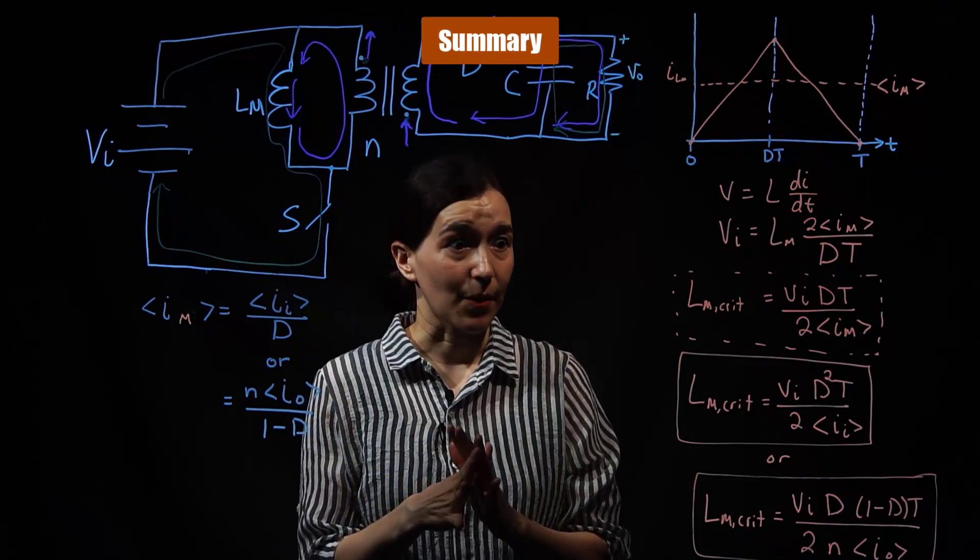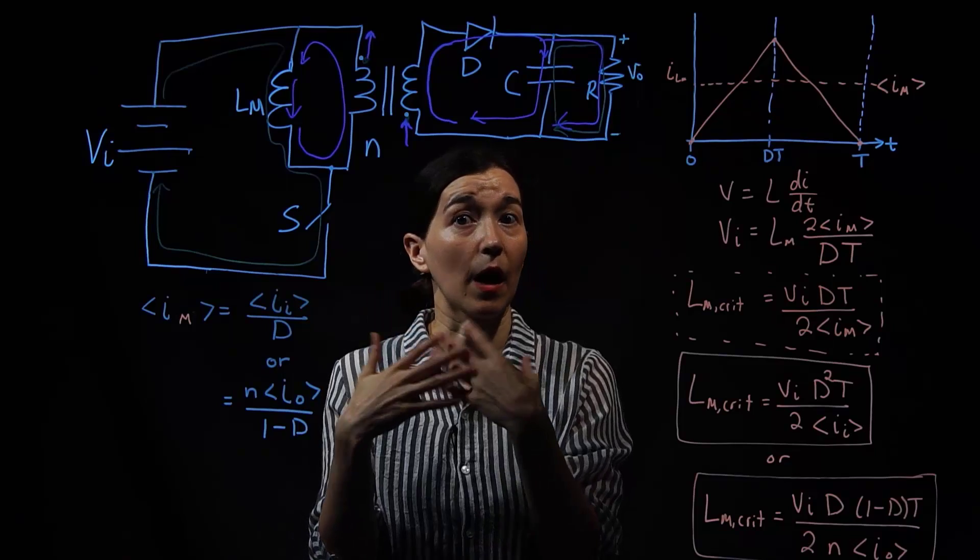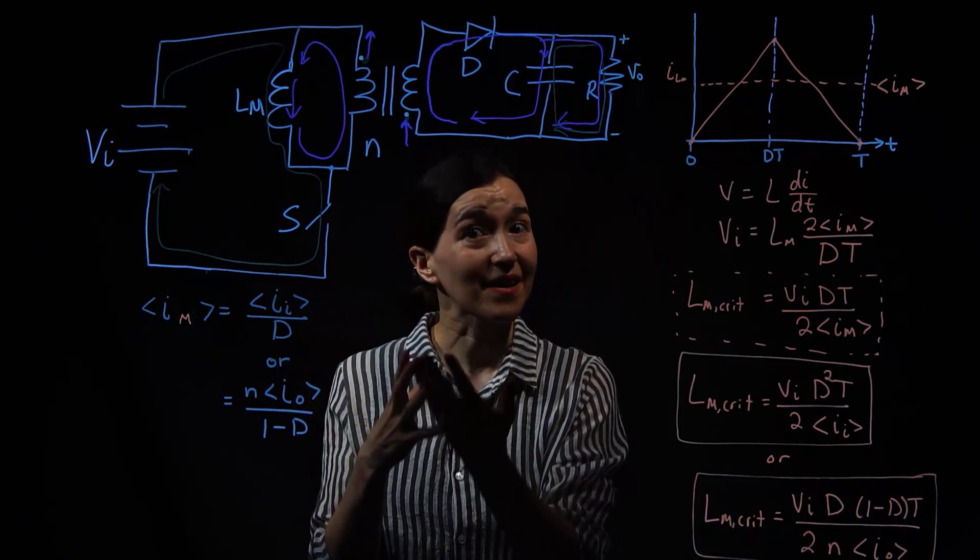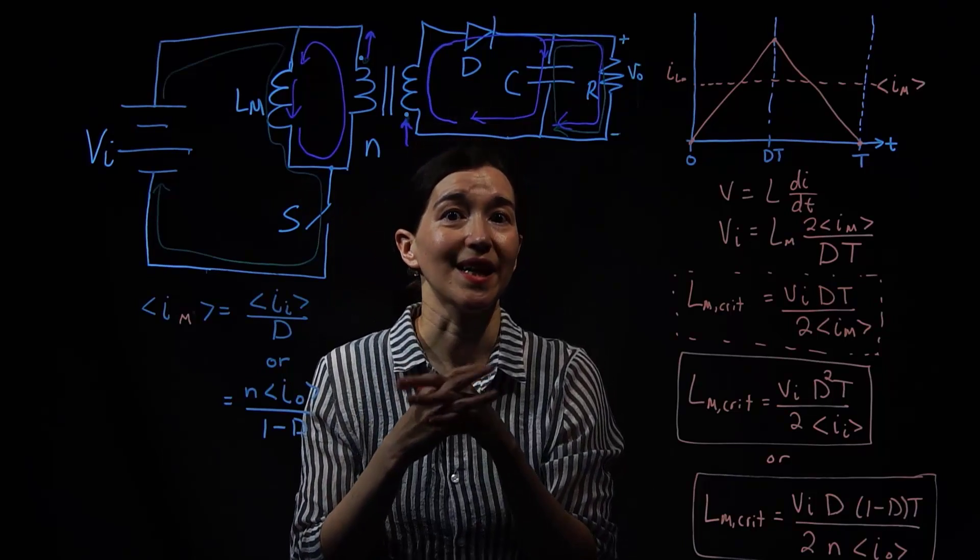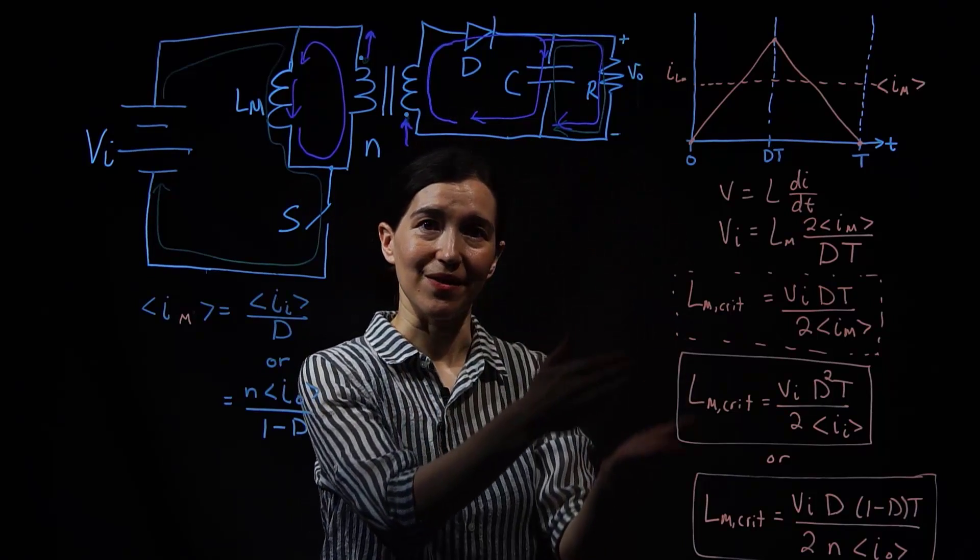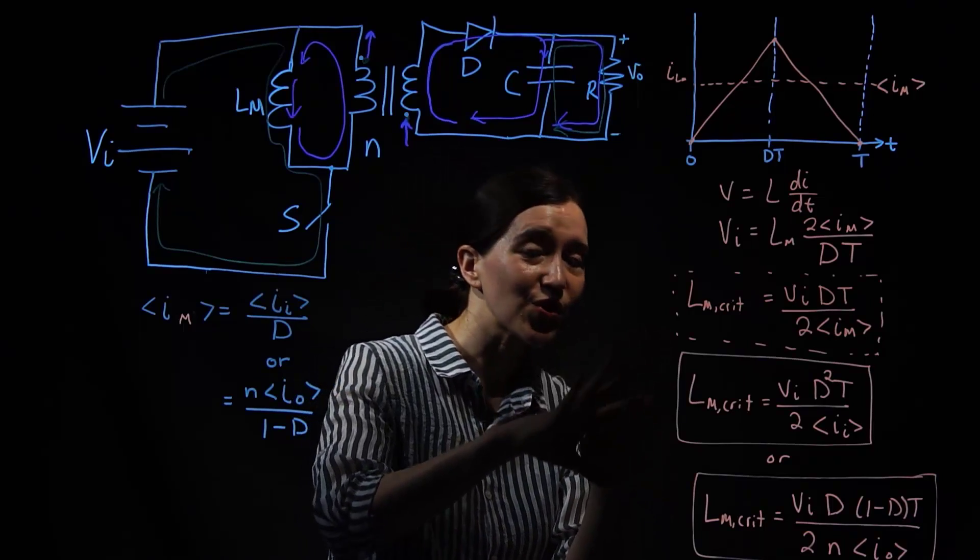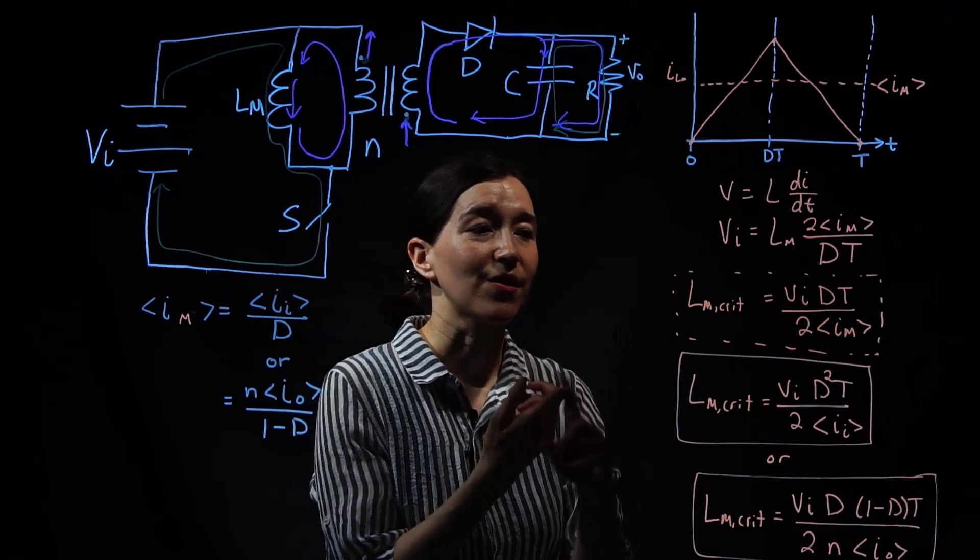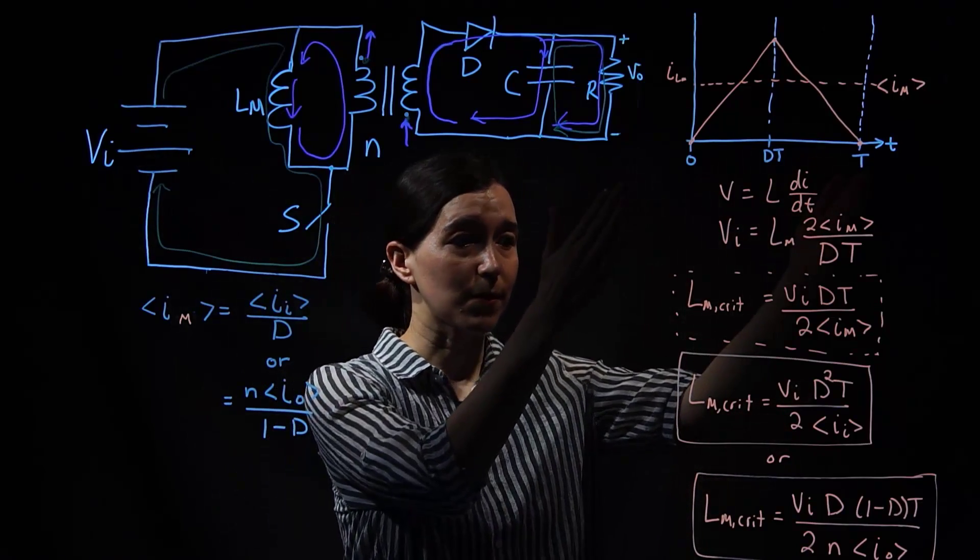So in summary, if we are designing our flyback converter and we want to figure out how much inductance, magnetizing inductance, we need in our coupled inductor, then we need to figure it out based on these equations. So we would need to know, well there's a few options for you to figure it out. You need to know the input voltage. You need to know the duty ratio. You need to know your switching period.